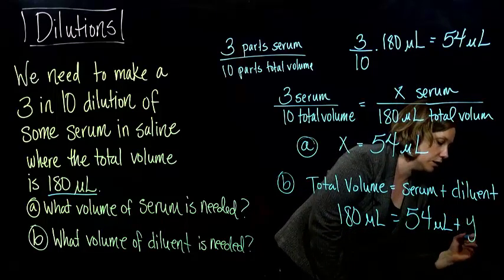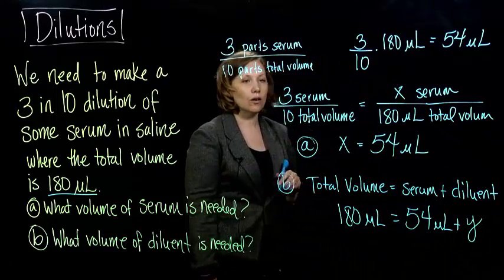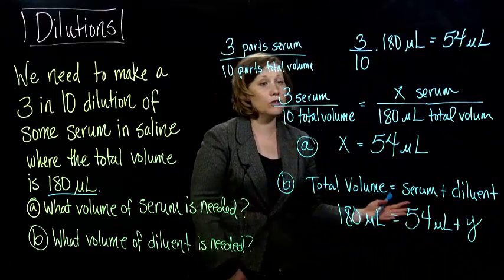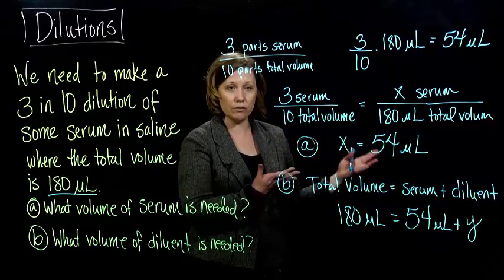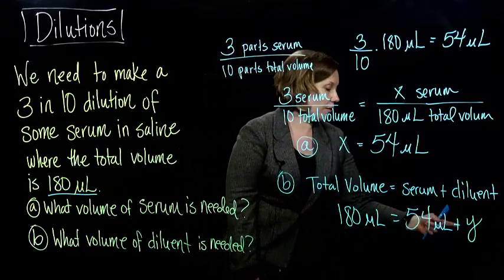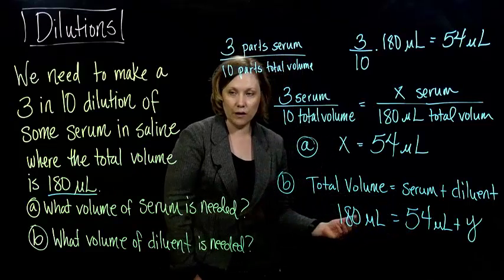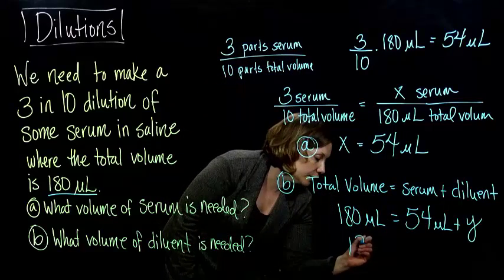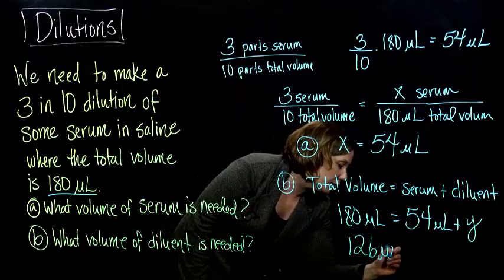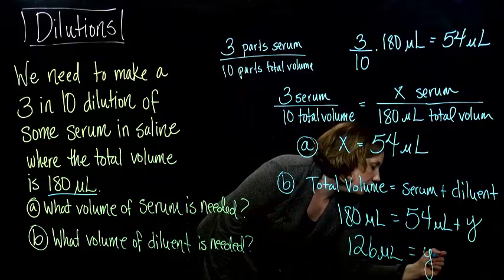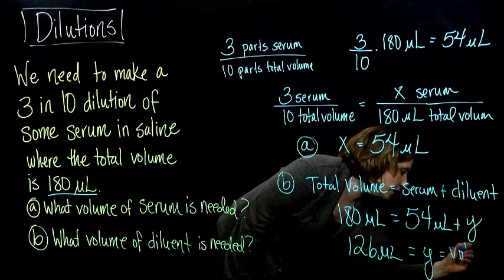Why not? Okay. So I'll call it y. We're solving for the diluent. You could have left it written as diluent if that makes more sense to you. So all we have to do is subtract 54 microliters from both sides. I have 180 minus 54. I get 126 microliters is y, which is the volume of diluent.